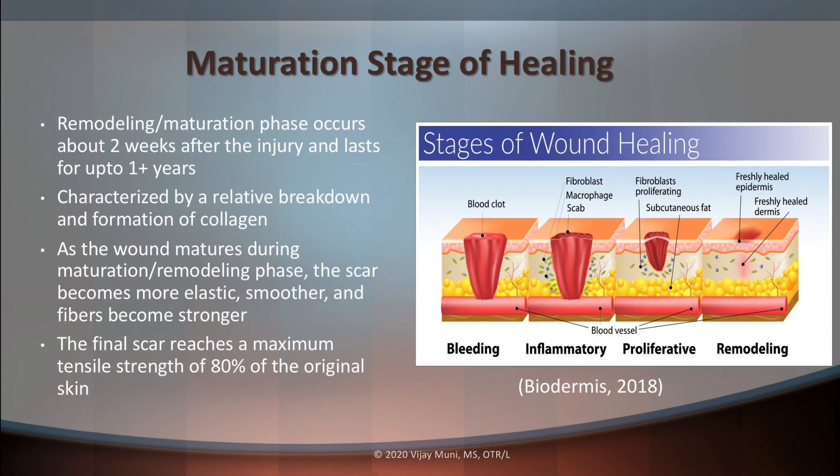As our wound matures during the remodeling phase, the scar tissue becomes more elastic, smoother, and the fibers become stronger. About three to four weeks in, the scar tissue reaches about 20 percent of the original strength, and eventually as the scar finalizes and matures, it reaches a final tensile strength of 80 percent of the original skin strength.